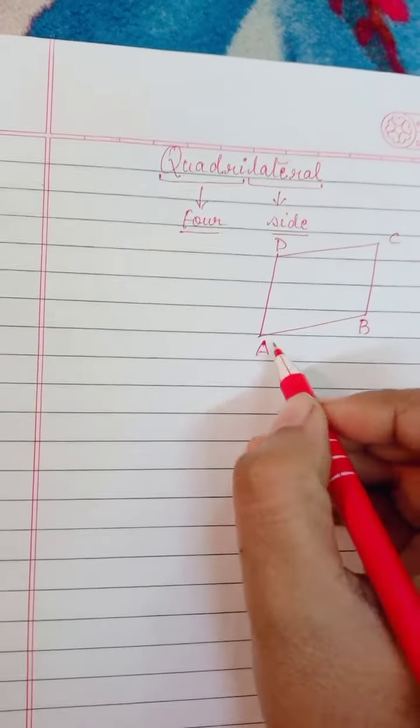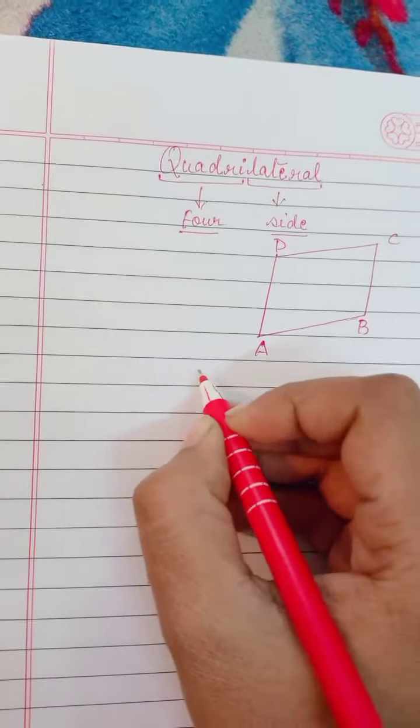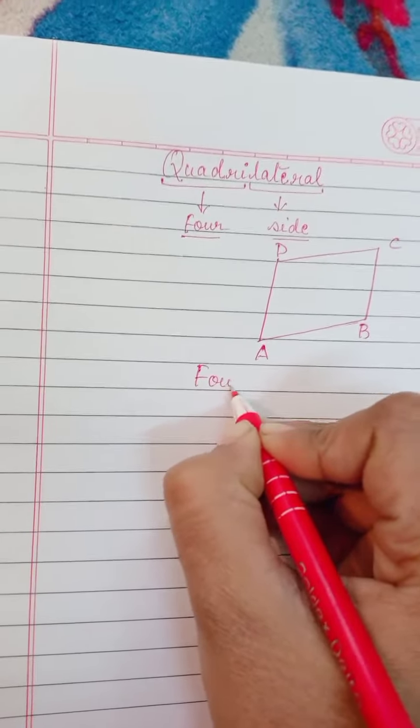Okay, so what we get here is that a quadrilateral has four sides. So, what does a quadrilateral have? It has four sides.